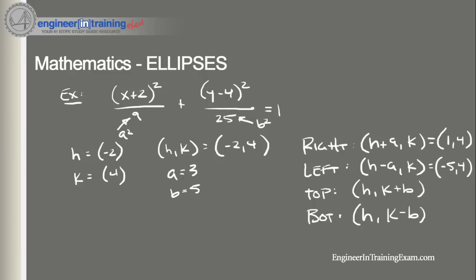And now we got to find the top, and now we're dealing with the b term. We know that h is going to be -2 and that k is 4 and we want to add 5 to that. So it's going to be (-2, 9). And now we want the bottom term. Once again, h is going to be -2 and we got b is equal to 5 and we minus that from k. So we get -1.